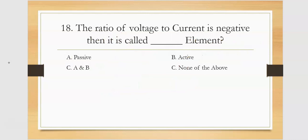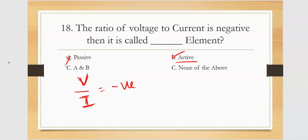The ratio of voltage to current is negative — what does that mean? Voltage is being generated rather than consumed. Which component is not consuming but generating voltage? Only active elements do that. Passive elements consume; only active elements generate. So when V/I is negative, it indicates an active element.